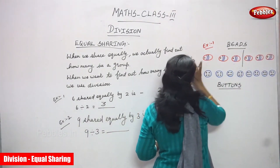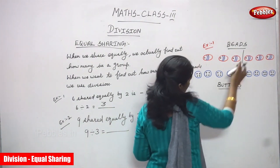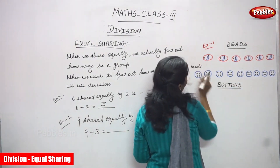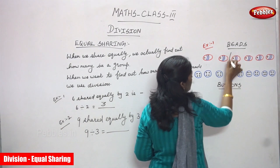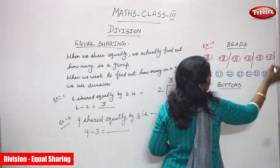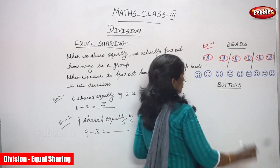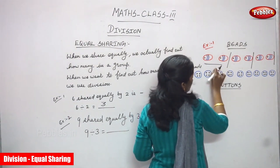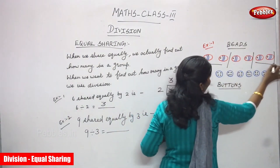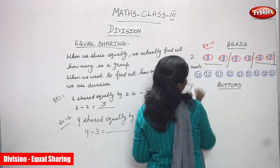How many beats are there? 6 beats. Now I am going to share equally 2 beats at a time. How many groups? 1 group, 2 group, 3 group. But in each group, how many? That is 2 beats.